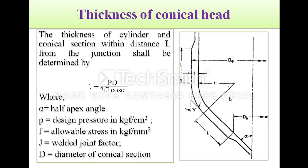The next one is the conical head. The thickness of the conical head is calculated using the formula t = p·D / (2·f·j·cos α), where all parameters have the same significance as before, and α is the half apex angle.